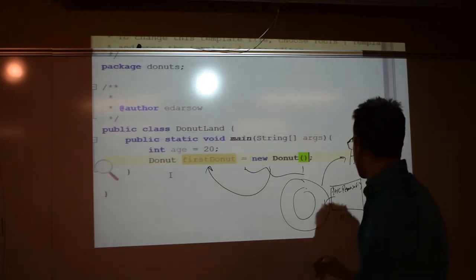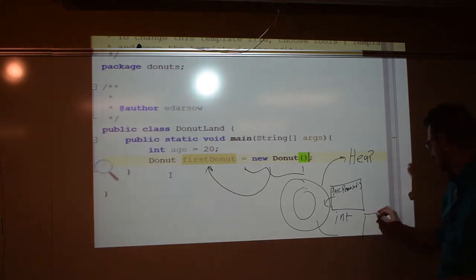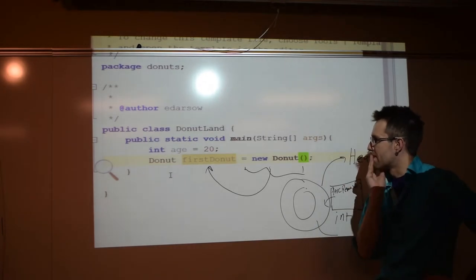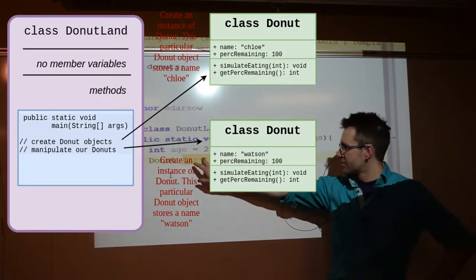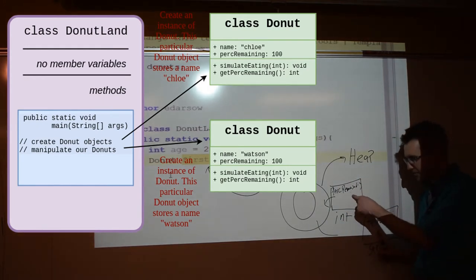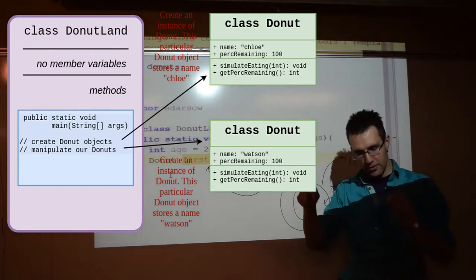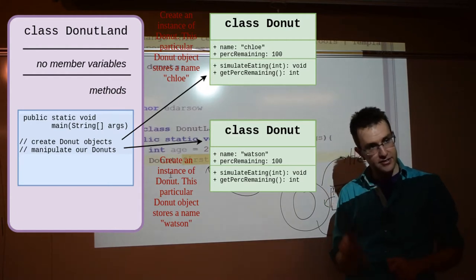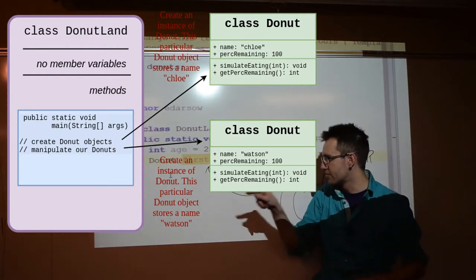Now, this is a little bit subtle. So we have these variables that are on each donut, meaning every donut has a percent remaining. Every donut has a texture. But I just made a particular donut. I made a single instance of a donut. And I call that single instance what? First donut.